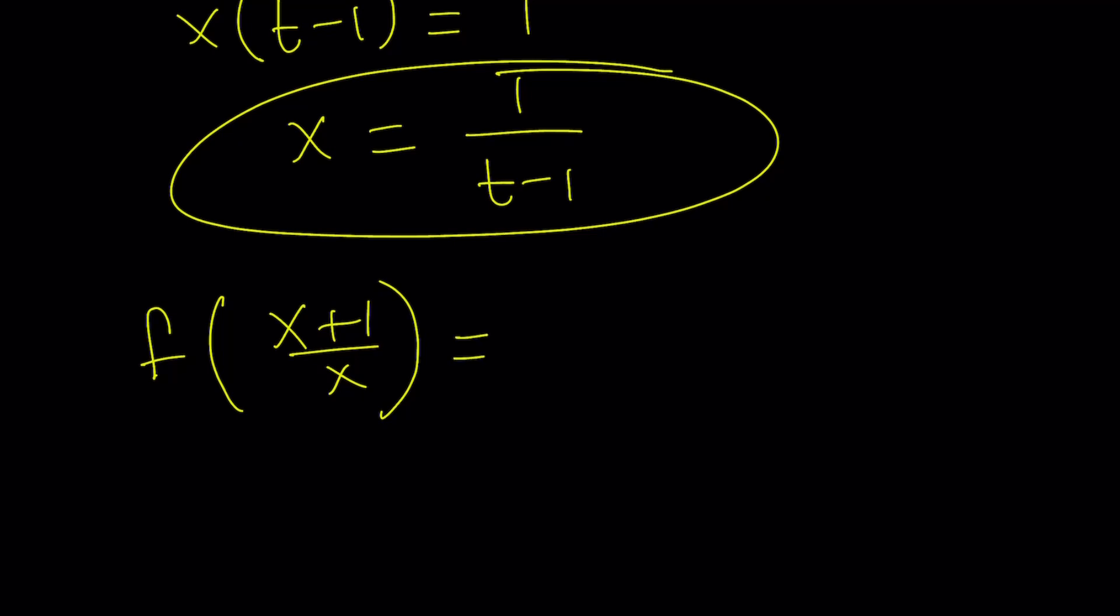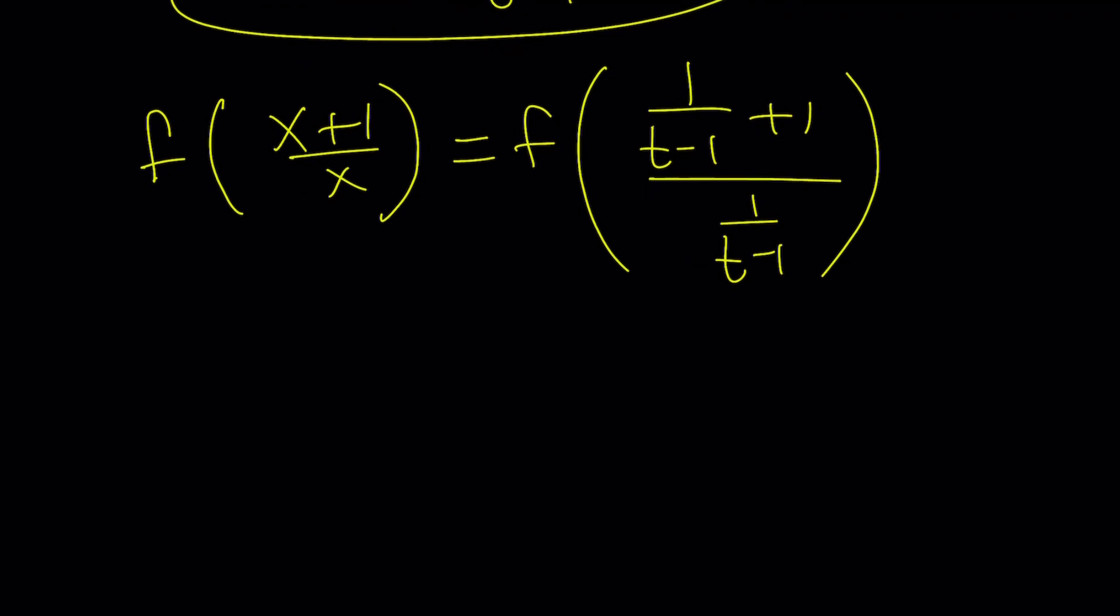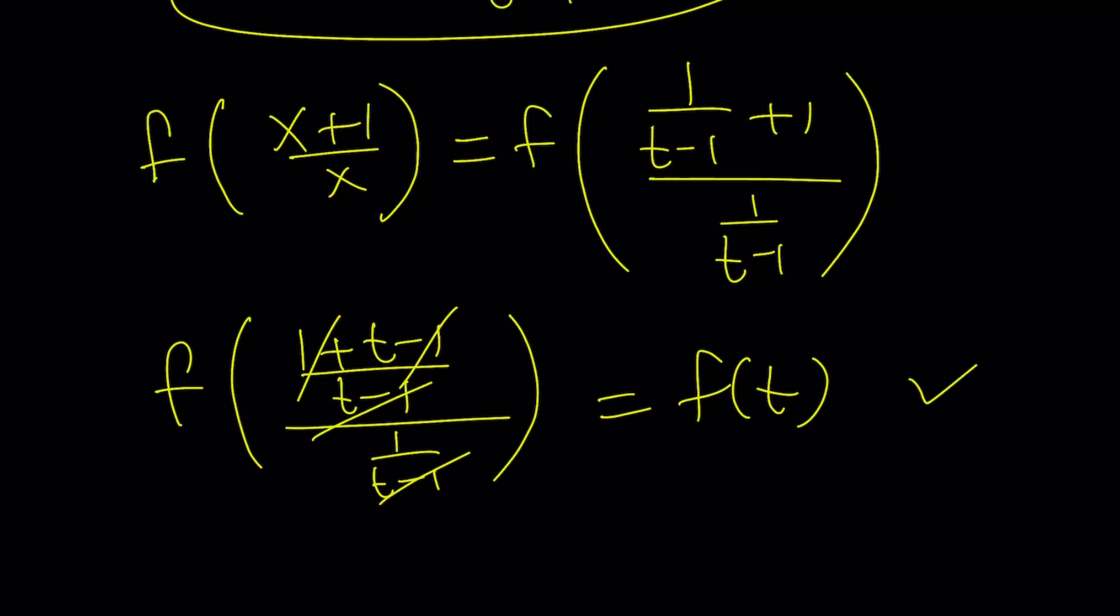So what am I supposed to do? Okay, replace x with this. Let's do it. f(1/(t-1) + 1 ÷ 1/(t-1)). What is that going to give me, right? That's the question. And when you make a common denominator, you're going to get (1 + t - 1)/(t-1) divided by 1/(t-1). And then t-1 cancels out when you flip and multiply. And this gives you f(t), as we claimed before. So it works.